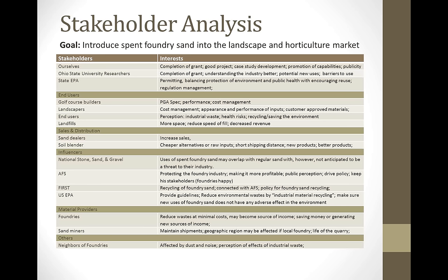The format for the stakeholder analysis is generally done in Excel, which makes it easier to manage. The goal goes at the top so you can always reference it while defining stakeholders and their interests, so you don't stray too far. Stakeholders are listed down the left-hand side and their interests in the right column. As you develop this further, you can create groups with similar interests — end users like golf courses, landscapers, and landfills may share interests, as may soil blenders and sand dealers in the sales and distribution category.